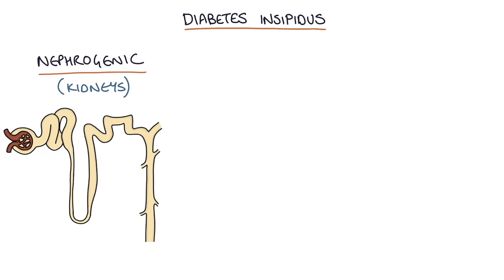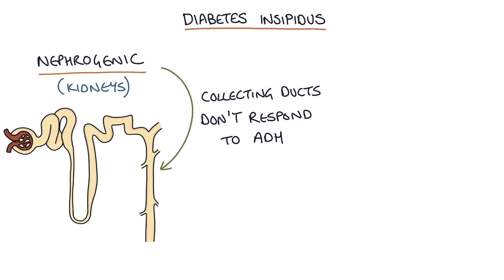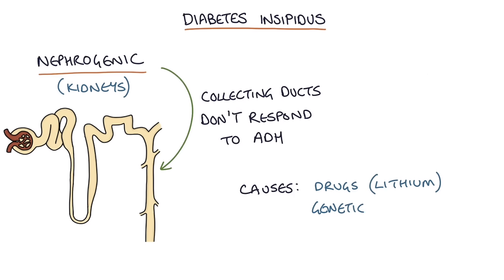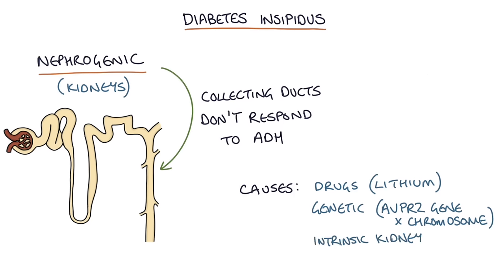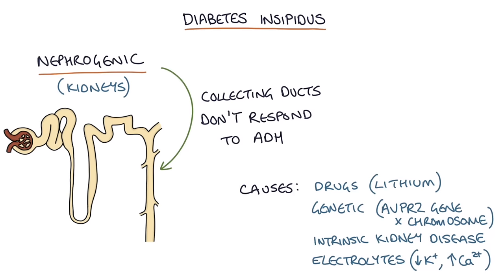Firstly, let's talk about nephrogenic diabetes insipidus. This is where the collecting ducts of the kidneys don't respond to the ADH that's in the bloodstream, and this can be caused by a number of different factors. One of the key causes is drugs, particularly lithium, used in bipolar affective disorder. There's also a genetic abnormality — mutations in the AVPR2 gene on the X chromosome. Intrinsic kidney disease, or chronic kidney disease, can also lead to nephrogenic diabetes insipidus, as can electrolyte imbalances, particularly hypokalemia (low potassium) and hypercalcemia (high calcium).